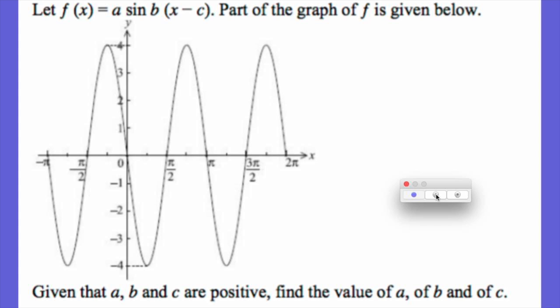Let F of X equal A sine(Bx minus C). Part of the graph is given. A, B, and C are positive. Find A, B, and C. What is A? A is four — you have a maximum at positive four and a minimum at negative four. What's B? B is two — it completes two cycles from zero to π. And C, which represents our shift? C is π over 2.